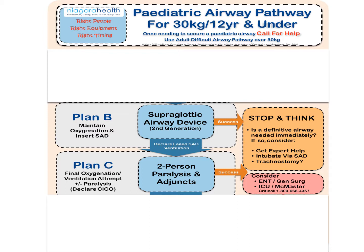For Plan B, just as in the adult population, we don't want more than three attempts at supraglottic airway device insertion. There are a couple of things unique to the pediatric population that may help. If you're having difficulty, you can consider inserting a nasopharyngeal airway to assist with oxygenation. If cricoid pressure is being utilized, this is the time to release it to allow the supraglottic airway device to sit properly. There is also a suggestion that you could go up a size in the supraglottic airway device if you're getting partial oxygenation and it appears to be a seal issue.